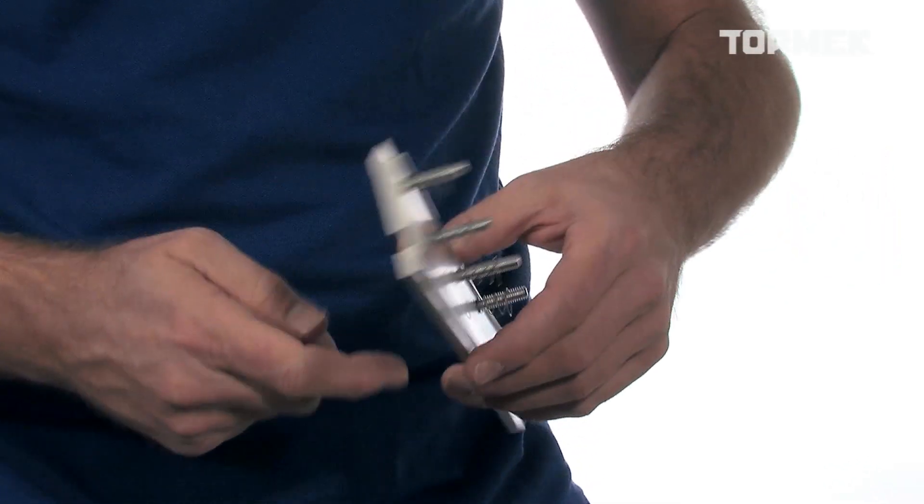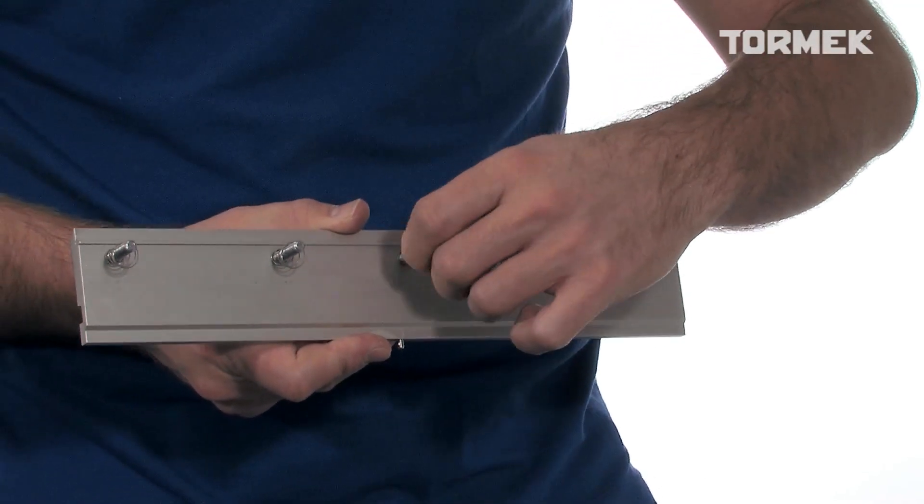When grinding mitre guillotine blades, you remove one or two of the screws.